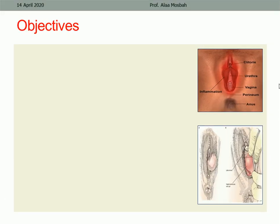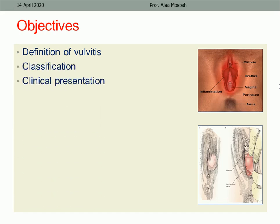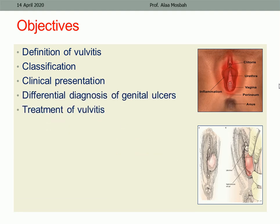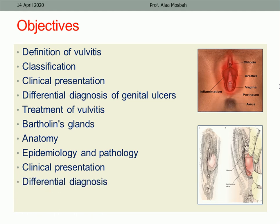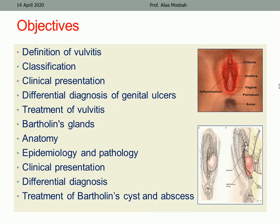What we wanted to discuss today: the definition of vulvitis, its classification and clinical presentation, the differential diagnosis of genital ulcers, treatment of vulvitis, Bartholin glands anatomy, epidemiology and pathology, inflammation and infection, clinical presentation of Bartholin cysts and abscess, differential diagnosis of vulval swelling whether solid or cystic, and lastly, treatment of Bartholin cysts and abscess.